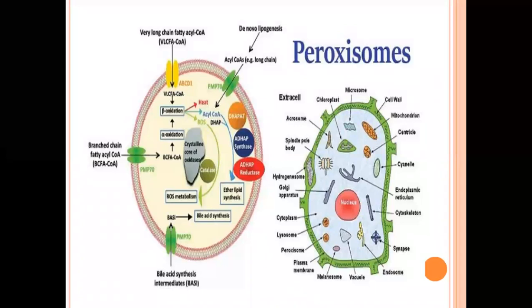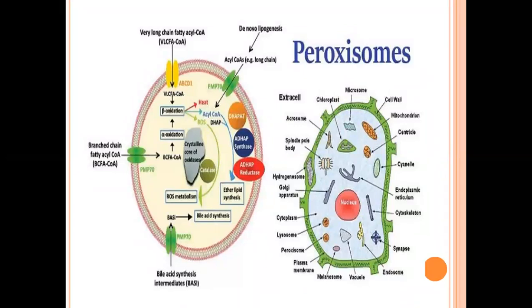They are formed as dilation of endoplasmic reticulum. They are filled with an electron dense substance and are limited by a single membrane. Only a single membrane is present around the peroxisomes.